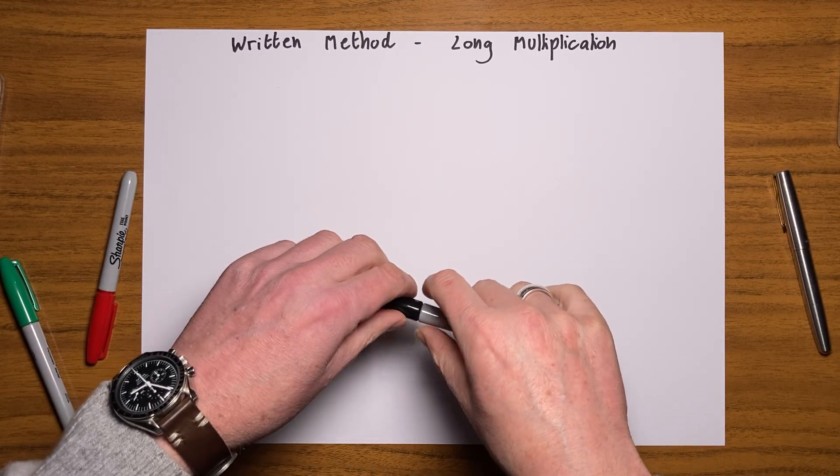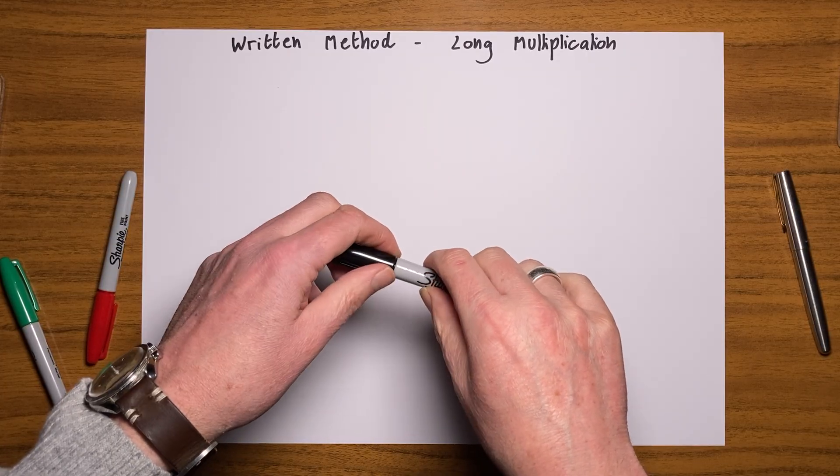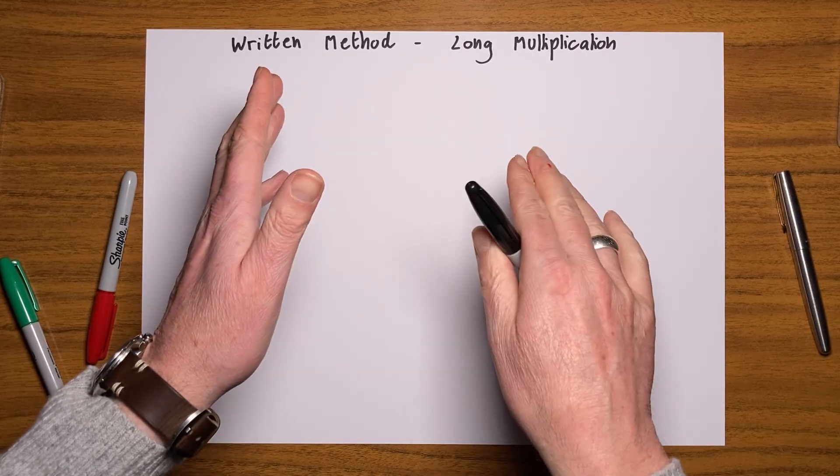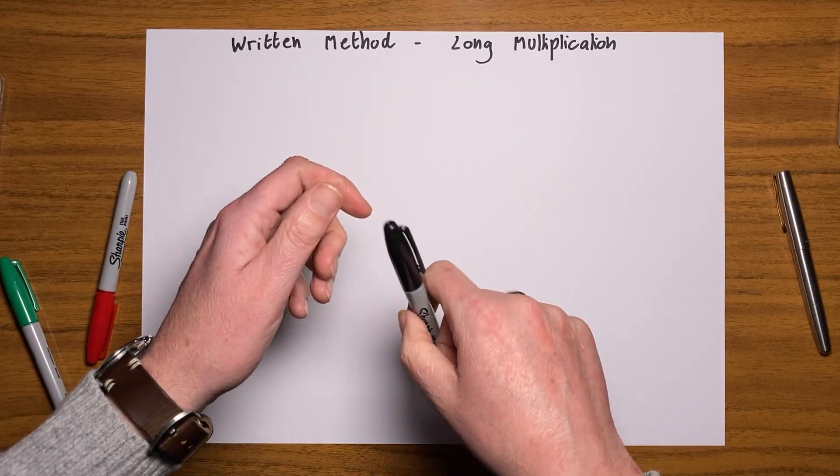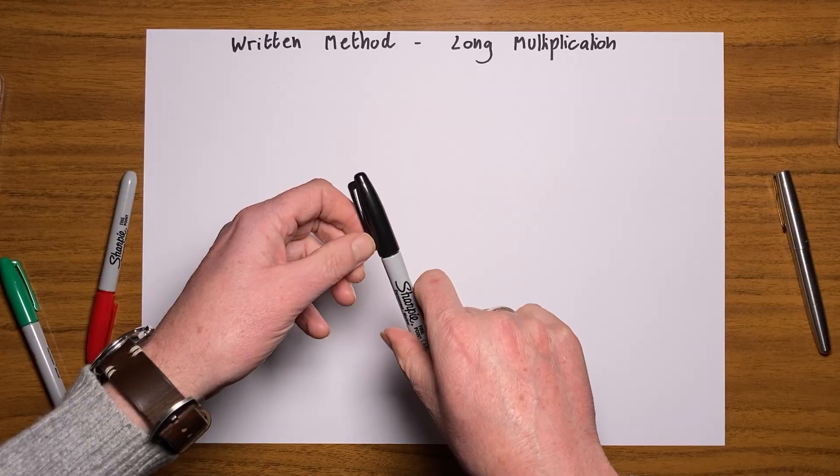Hello and welcome back. Once you've mastered the delights of short multiplication, which is multiplying a number by a single digit number, it's time to move on and learn how to do long multiplication, which is quite similar to short multiplication but, hey, guess what, it's longer.